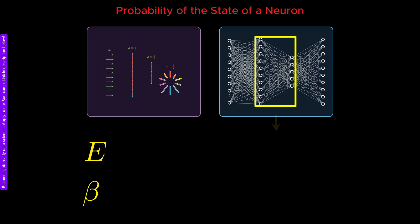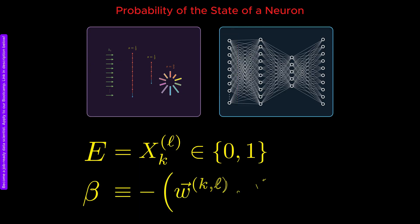For hidden neurons, we only have 2 possible states, and therefore the energy takes only 2 values, 0 or 1. The inverse temperature beta should be interpreted as a linear combination of all the neuron states in the previous layer.